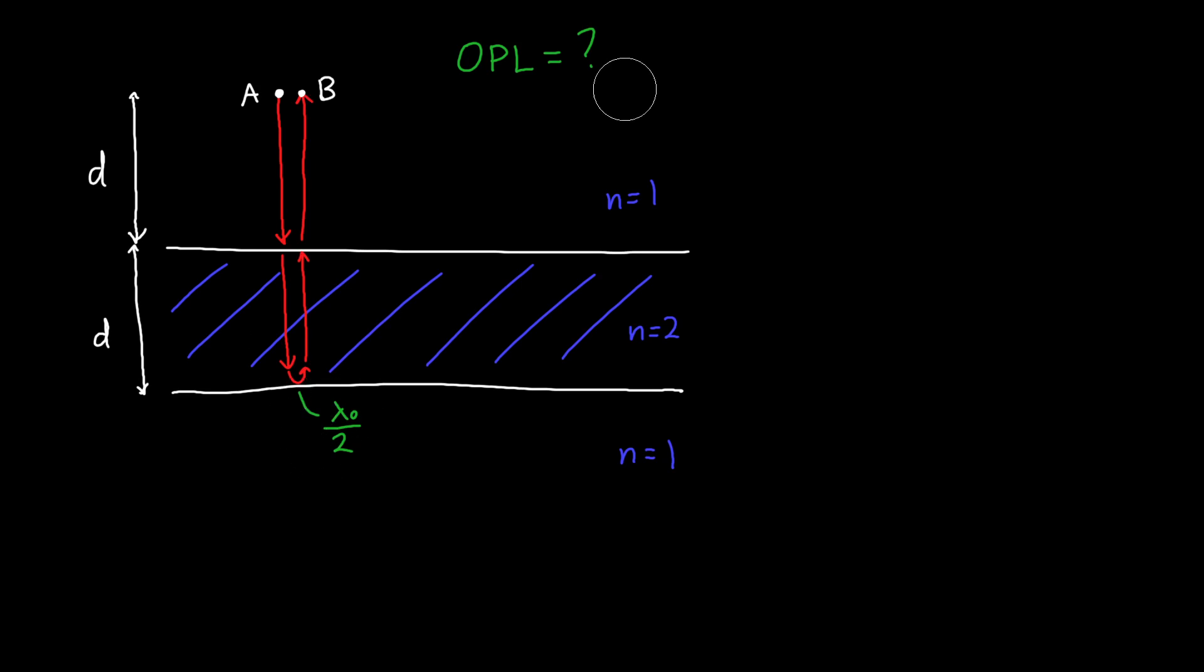So we can do this one at a time. First, the optical path length of this first little segment is the distance from A to this interface, which I've just drawn as D. So the distance is D and the refractive index is 1. So that's the first optical path length. And then when we go through the slab of material, remember that when we transmit through a material, there's no phase shift that we have to worry about. So we only care about the distance from this interface to the bottom interface, which the distance is still D like it was before. And now the refractive index is 2. So the optical path length is twice what it was before.